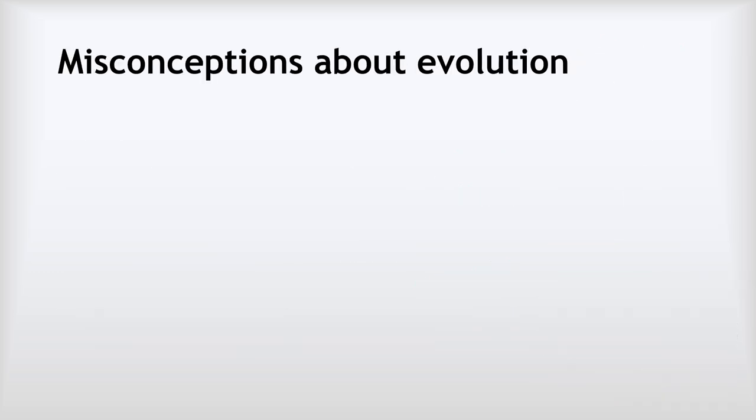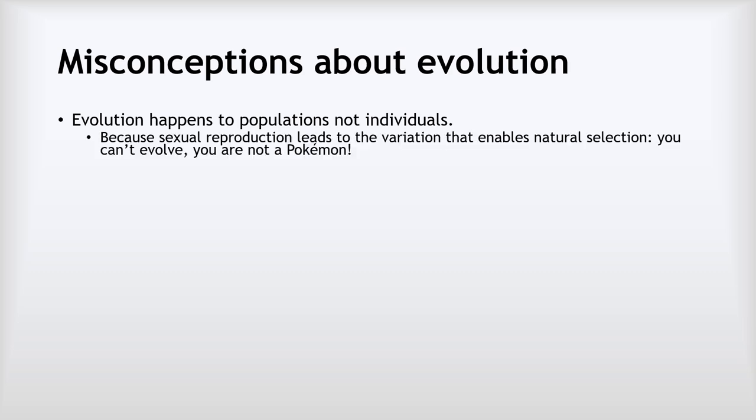I want to finish up by talking about a few misconceptions about evolution. Misunderstanding number one is the idea that evolution happens to populations, not to individuals. People often say, 'Why aren't I evolving?' The reason you're not is because an individual can't evolve. Because sexual reproduction leads to the variation that enables natural selection, you can't evolve. You are not a Pokemon.